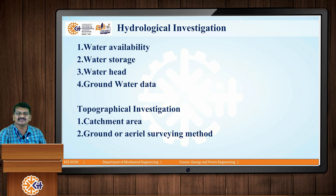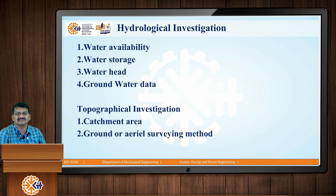Topographical investigation is required to determine what the catchment area looks like. Ground or aerial survey methods are generally used while selecting the catchment area. This topographical investigation establishes the topography at the location where we are going to construct the hydroelectric power plant.